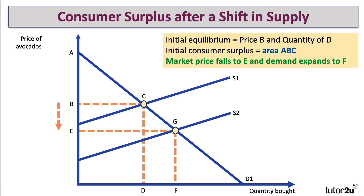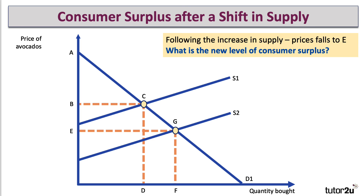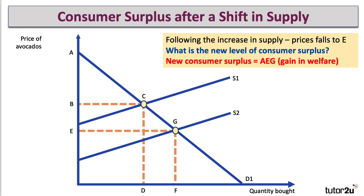The quantity bought and sold has gone up from D to F. Following the increase in supply, the price falls to E. The new consumer surplus is the area above the price E and below the demand curve — that is, the area A, E, G. You can see that A, E, G is bigger than A, B, C. There has been an improvement, or a gain, in consumer welfare.